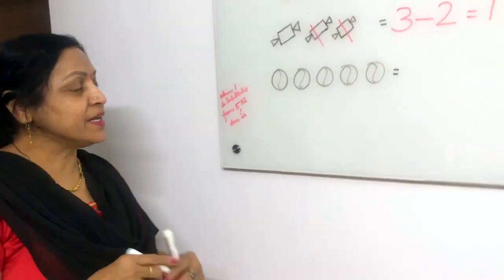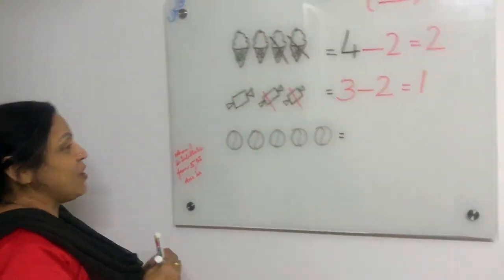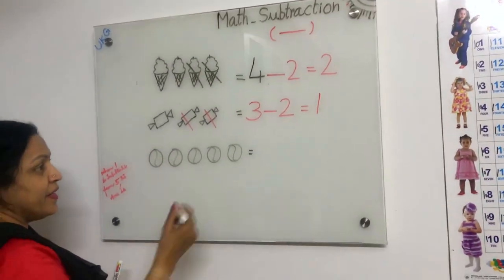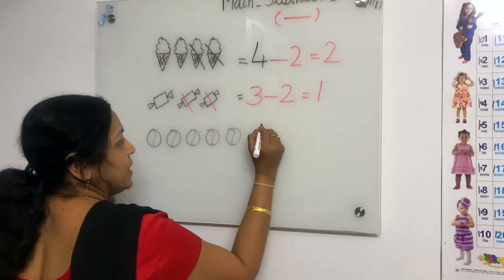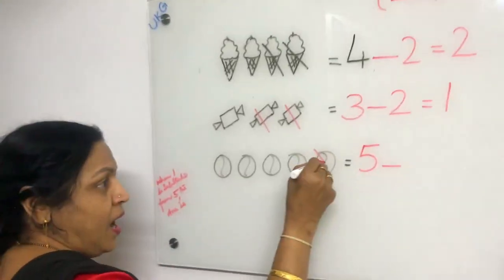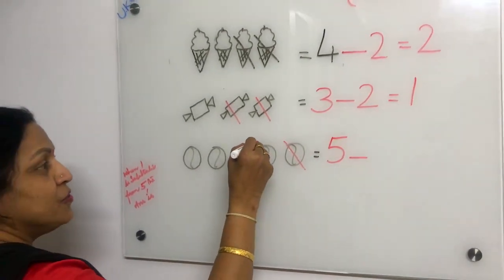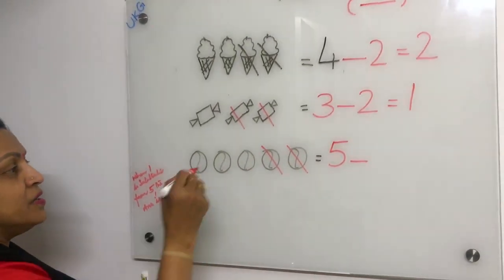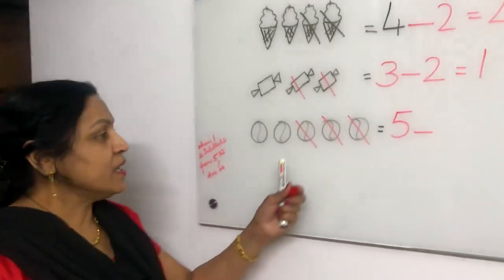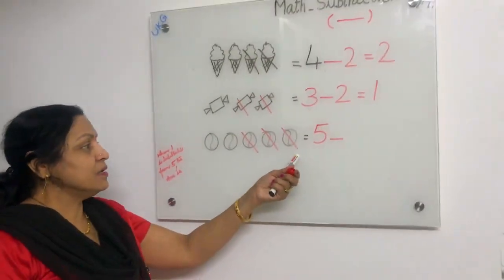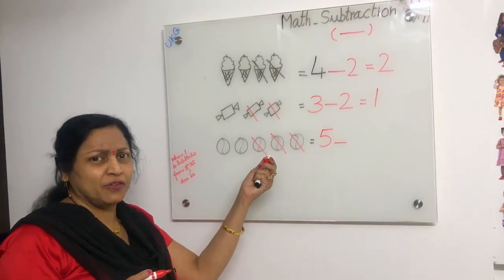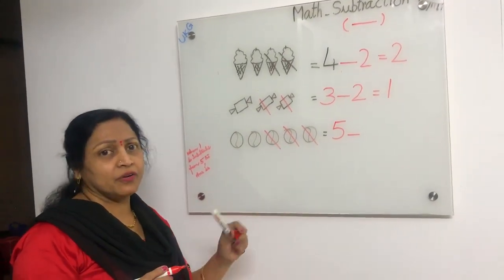Now how many balls are here, children? Come on, let's count — one, two, three, four, five. Five balls are there. In these five balls, one ball I gave to Asrit, one I gave to Srivardha, and one I gave to Harshita. So three balls I gave to children.